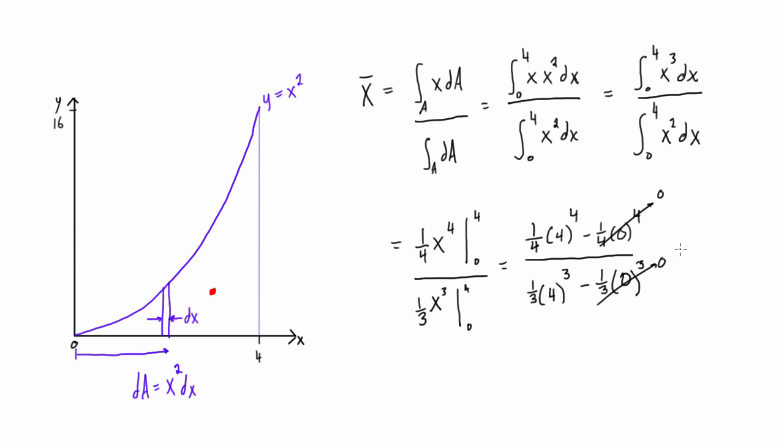And this just leaves us with 1 fourth times 4 to the 4, over 1 third times 4 to the third. So if we simplify that, this becomes actually just 64 over 21.333 repeating. And if you divide these, 64 divided by 21.333 repeating, we get x̄ is equal to 3.